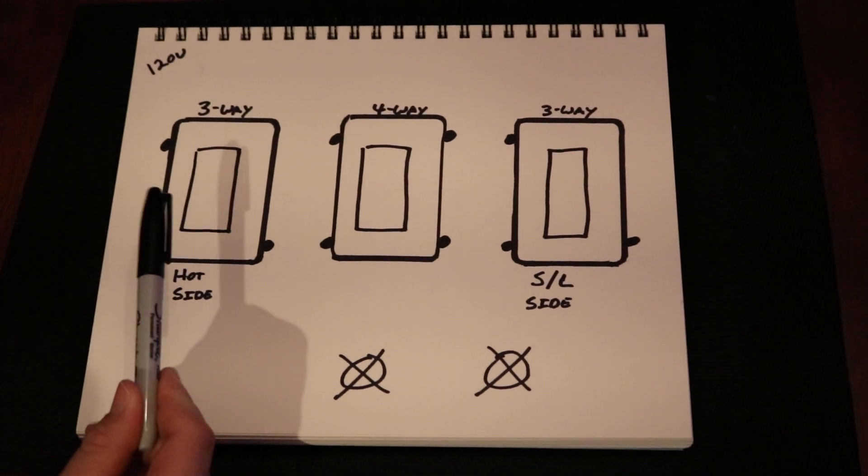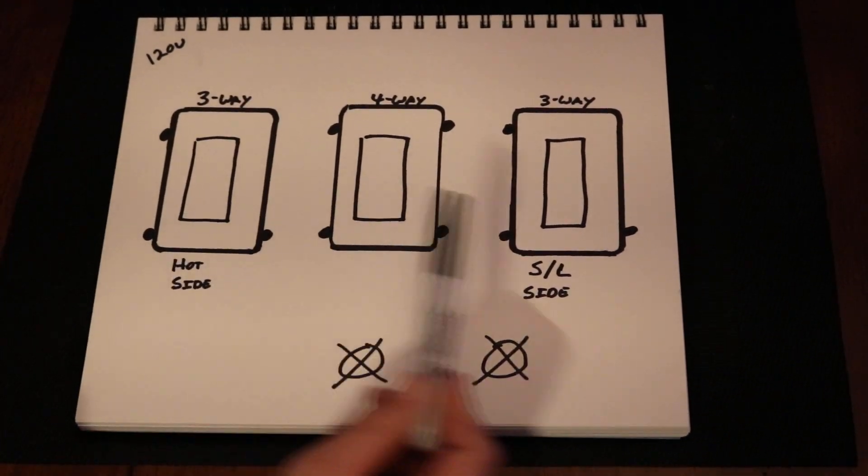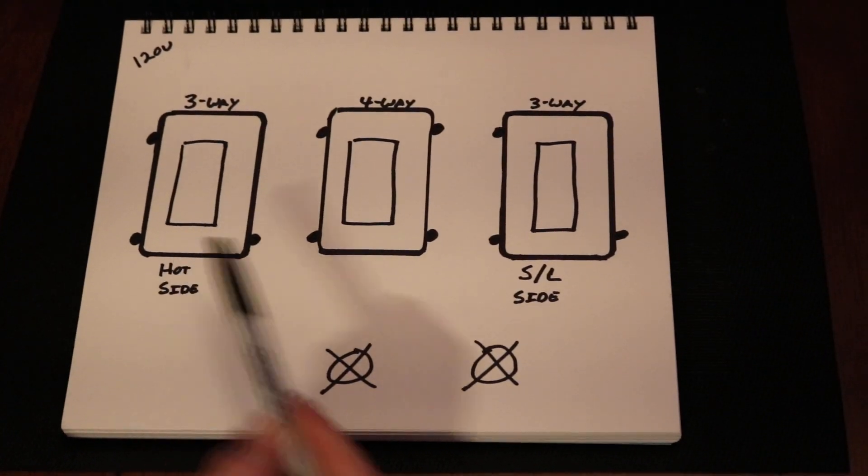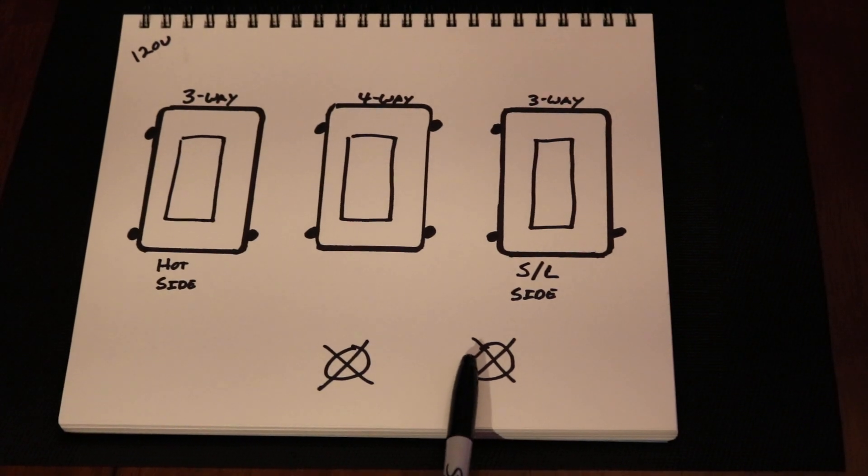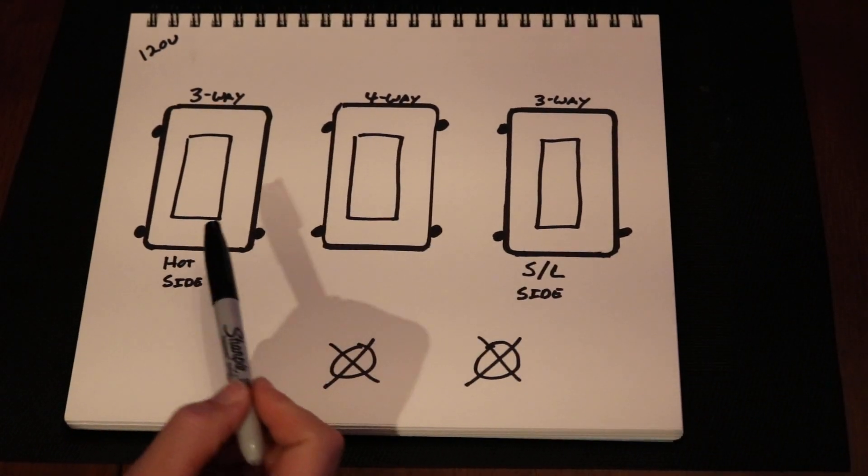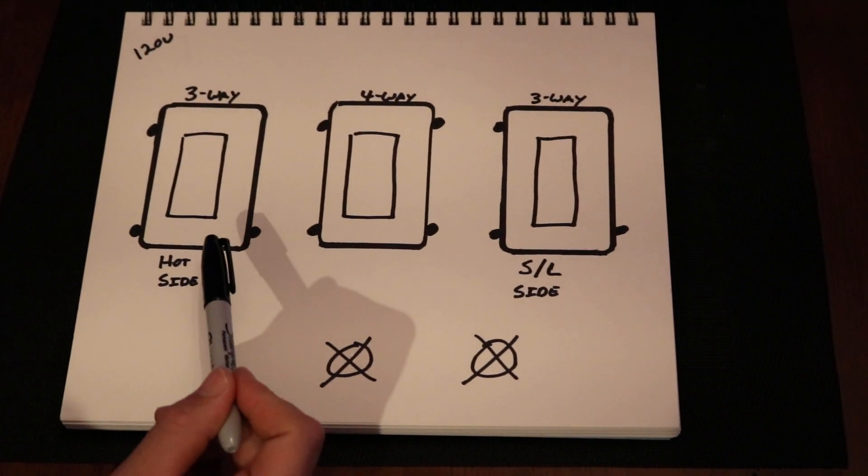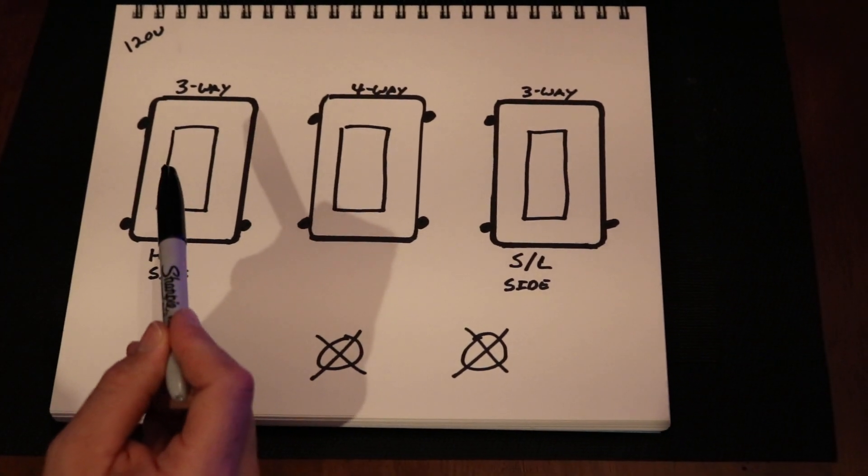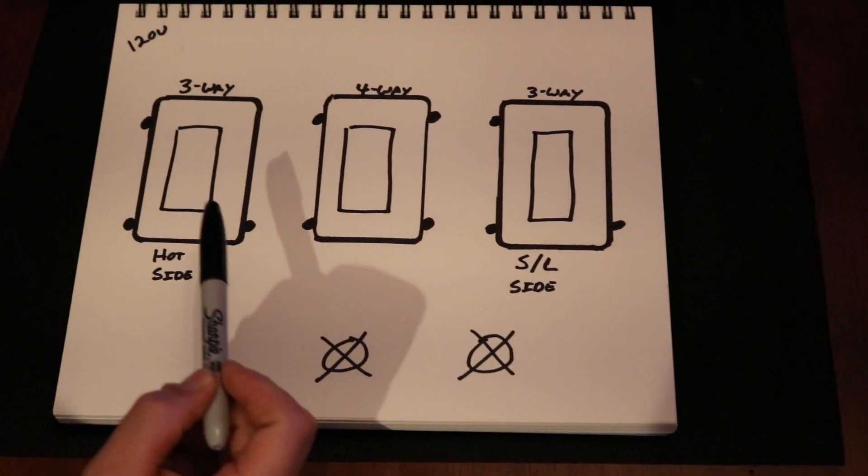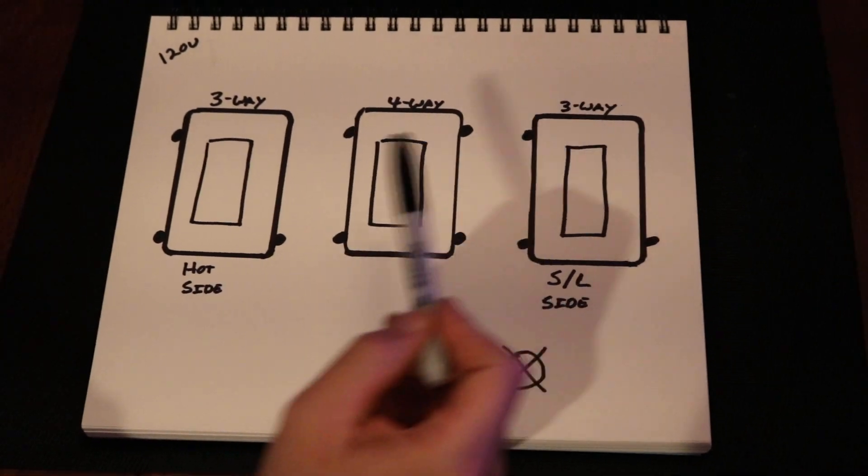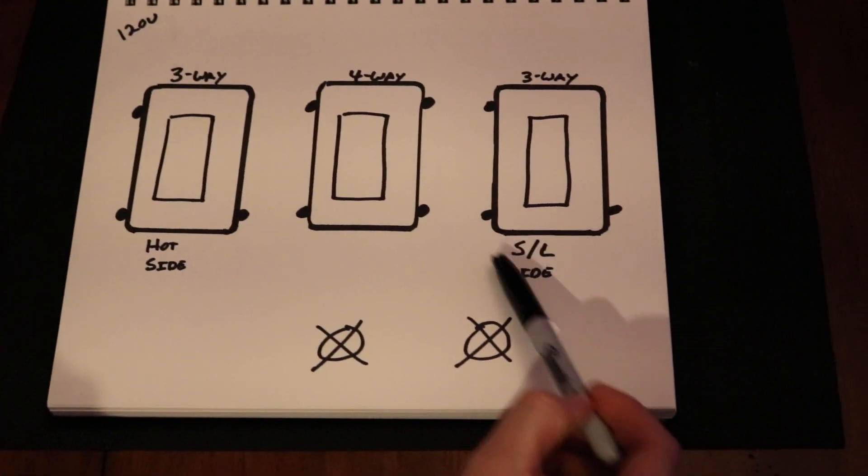When we talk about three-way switches, we're talking about switches that allow you to control a single group of lights from different locations. There's going to be a minimum of two, and when you have a three-way you have what's called a hot side and a switch leg side.